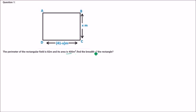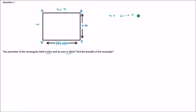Given that the area is 400 meter square, we have to find the breadth of the rectangle. The perimeter of the rectangle is already given as 82 meters. The perimeter is the sum of the boundaries, that is the sides. So if one side is x, this is 41 minus x, and this will also be x. So the perimeter is x plus 41 minus x plus 41 minus x plus x.